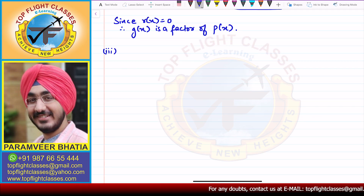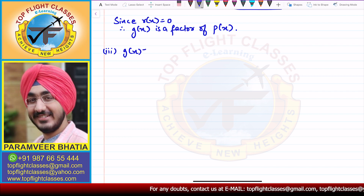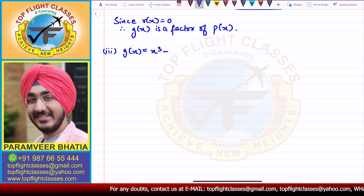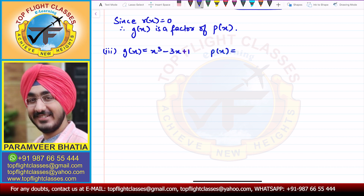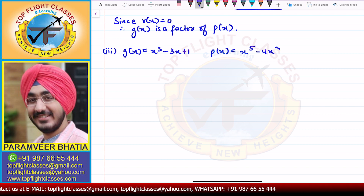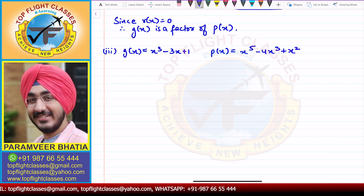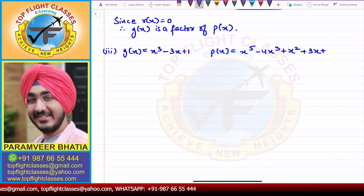Now the third part: g(x) = x³ − 3x + 1, and p(x) = x⁵ − 4x³ + x² + 3x + 1. We will use the long division method again.